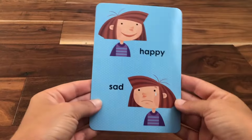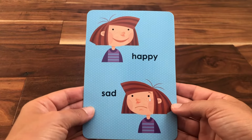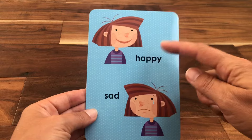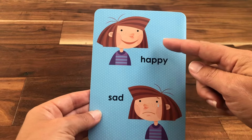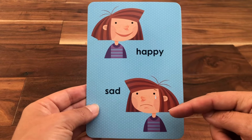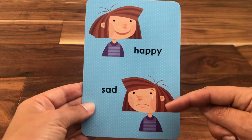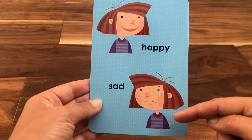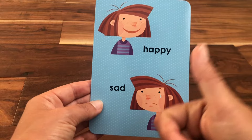An opposite is something that is different from something else. So the opposite of happy is sad. Say it with me: the opposite of happy is sad. Great job.